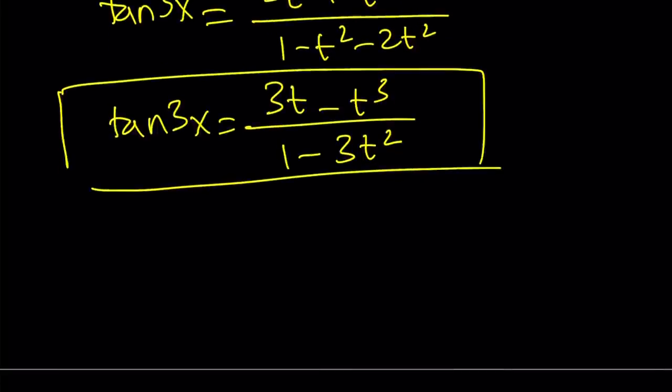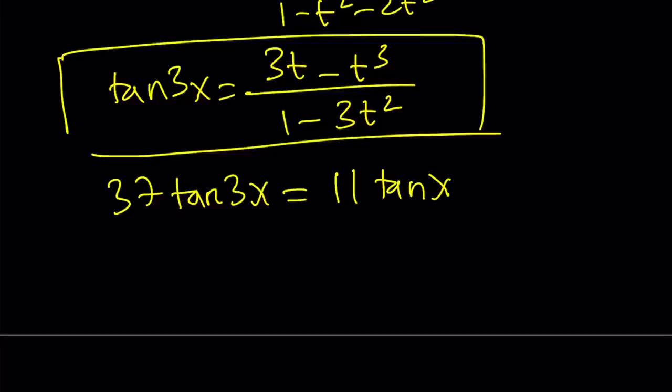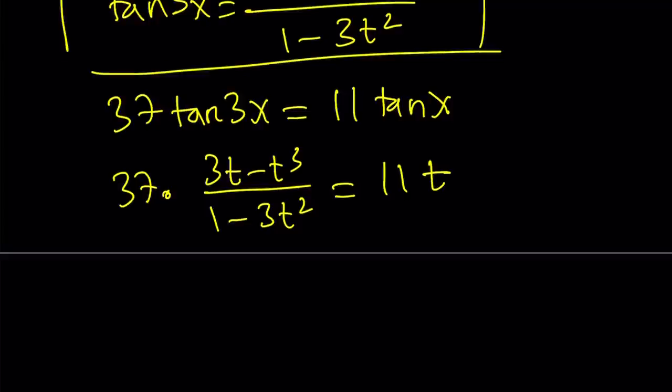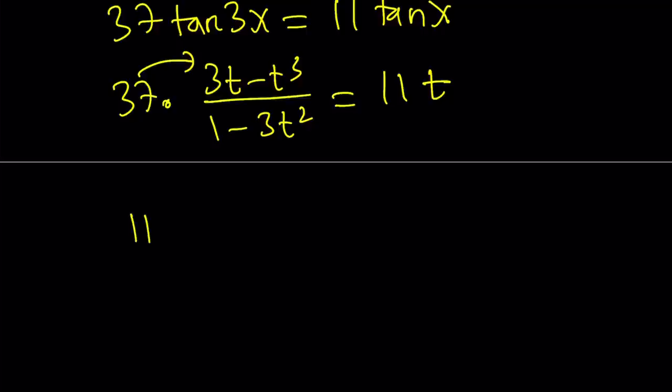Let's go ahead and replace tangent 3x with that in our equation. Remember our original equation was 37 times tangent 3x. Where does the 37 come from? Who thought of this? So now I'm going to replace tangent 3x with 3t minus t cubed over 1 minus 3t squared. And obviously tangent x is just t. Let's go ahead and cross multiply. 37 times 3 is 111. That's going to give us 111t minus 37t cubed. On the right hand side, we're going to get 11t minus 33t cubed.